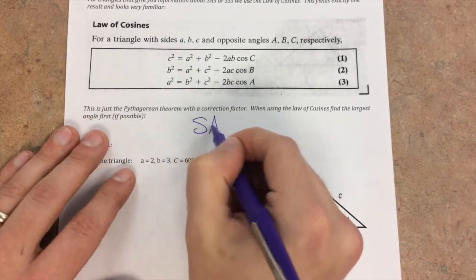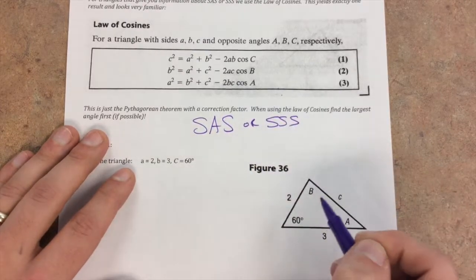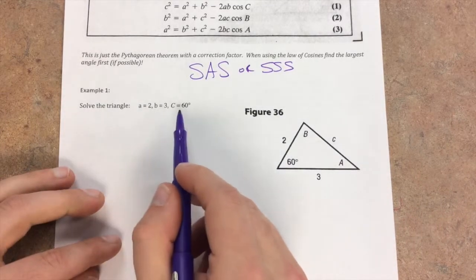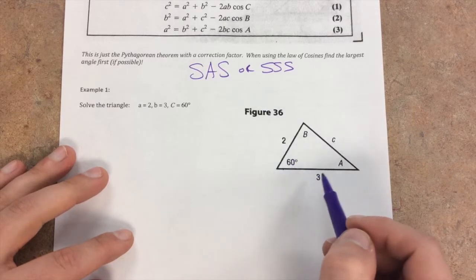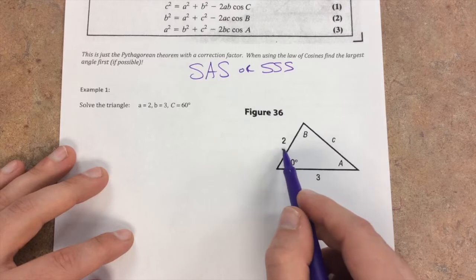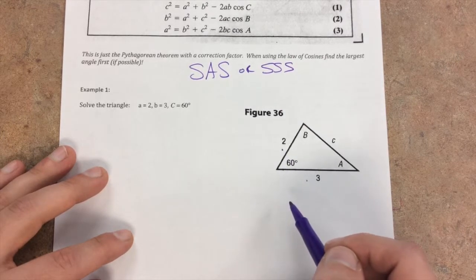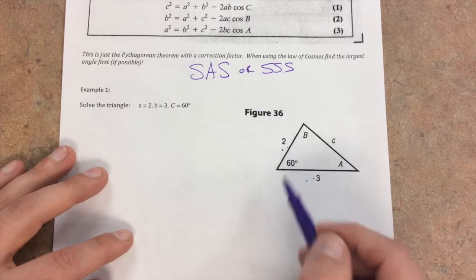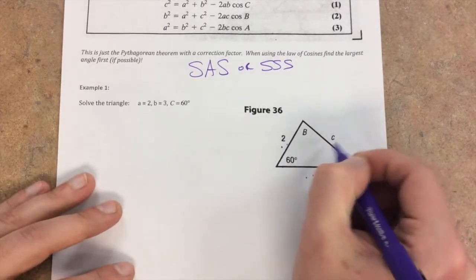Side, angle, side, or side, side, side. So solve the triangle A, B, C. We have C right here. We have information about A and B. So we have side angle side. What are we going to do? We're going to find little C first.